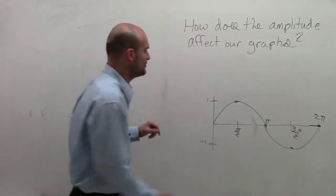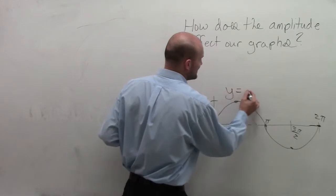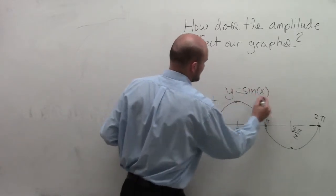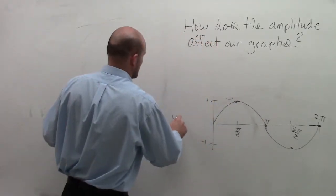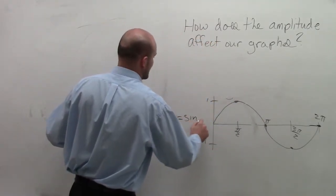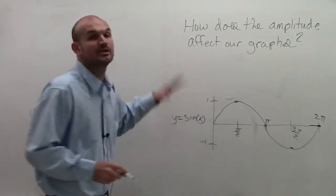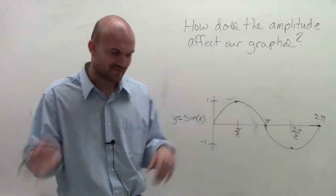All right. So that is what we call y = sin(x), our parent graph. Let's put that to the side. So that's our initial period, even though we know the graph continues in the positive and negative direction.